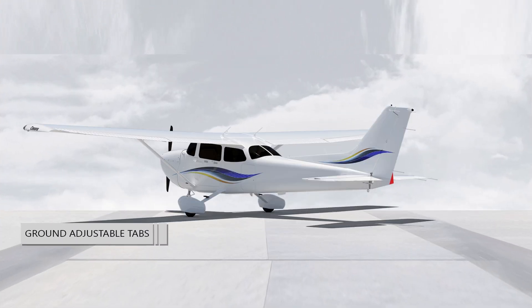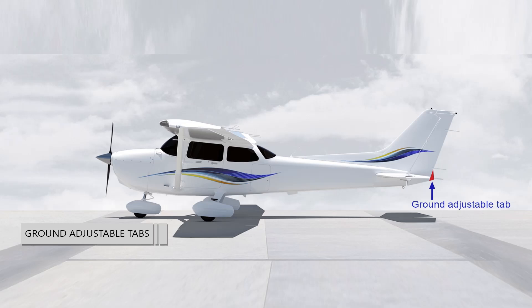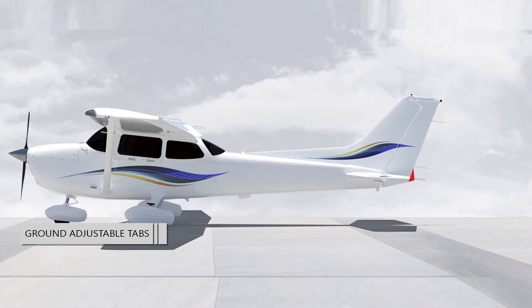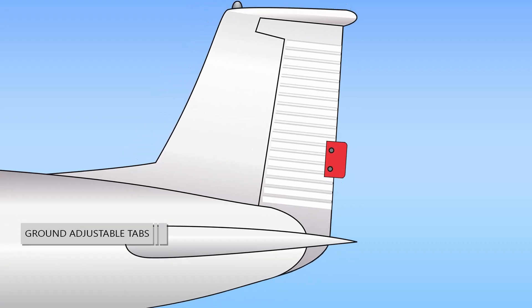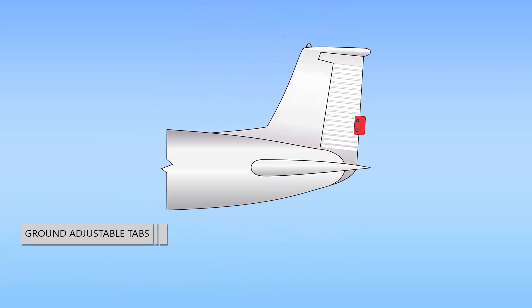Many small aircraft have a non-movable metal trim tab on the rudder. This tab is bent in one direction or the other while on the ground to apply a trim force to the rudder. The correct displacement is determined by trial and error. Usually, small adjustments are necessary until the aircraft no longer skids left or right during normal cruising flight.